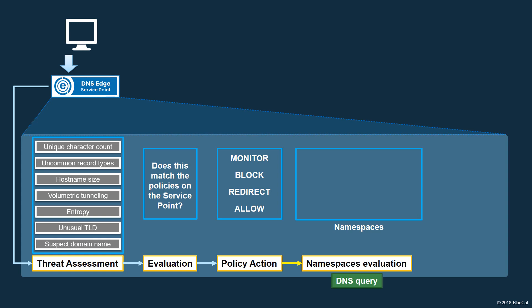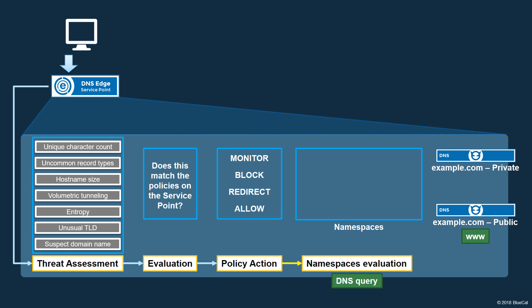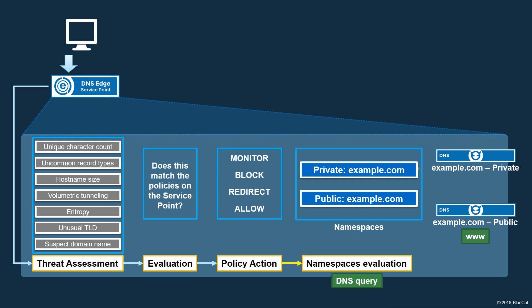Another function of the namespaces feature is that it enables a Service Point to resolve a query against different instances of the same domain name. For example, a company might have public and private versions of its domain — one that is internet accessible, and the other that is accessible only from inside the organization. Suppose that only the public version of the example.com domain contains the record named WWW. Normally, a DNS server can only resolve queries against one instance of a domain, so the DNS administrator would be forced to keep the record up to date in both copies of the domain. Using the namespaces feature, a Service Point can try another instance of the domain if the requested record is not found in the first. In this example, the Service Point would first forward the query to the private version of example.com. When the record is not found and an NXDOMAIN is returned, the Service Point would try the next namespace, which is associated with the public version of the domain. The query is forwarded to the public DNS servers, and because they contain the WWW record, the query can be resolved successfully.